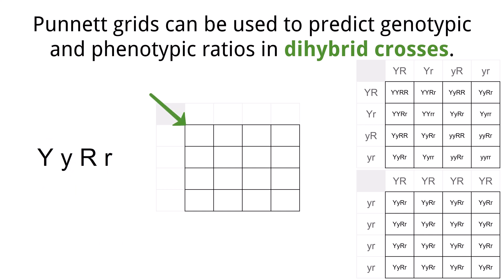To set up the gametes for the F2 Punnett grid, the FOIL method is used. This is the same method used in algebra: First, Outer, Inner, Last.